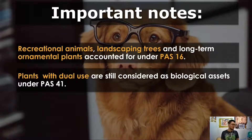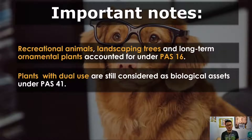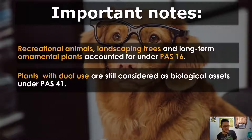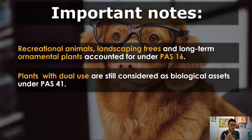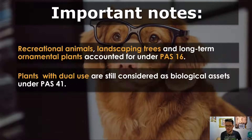A plant with a dual use: the best example is coconut trees. Coconut trees can bear fruit for several years, but there will come a time when a coconut tree will stop bearing fruits profitably. At that point, the coconut tree is converted into coco lumber. So if you have bought coconut trees for a dual purpose, that coconut tree is not a bearer plant — it is a biological asset under PAS 41, because you are going to harvest its fruits when it's still capable, and when it can no longer bear fruit, you will harvest it as coco lumber.